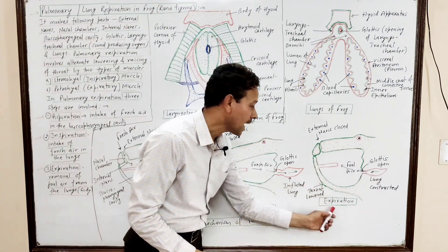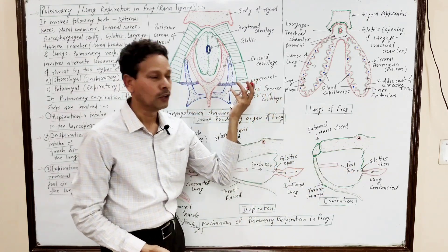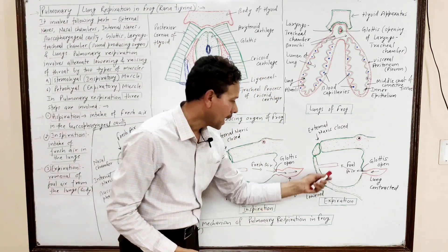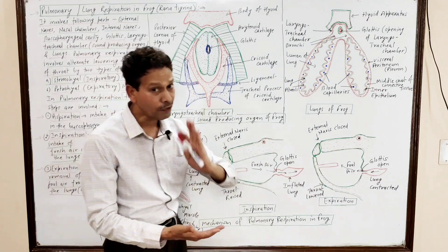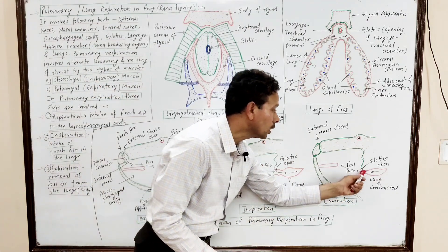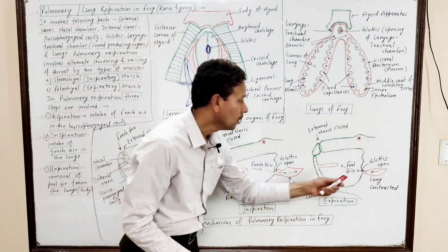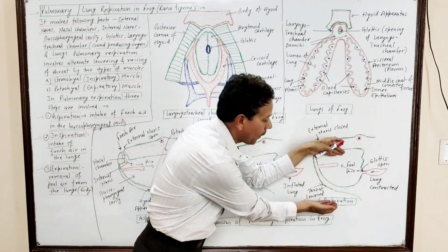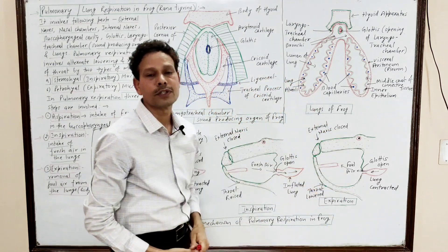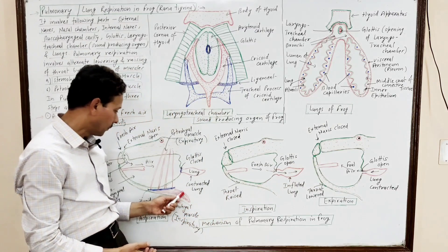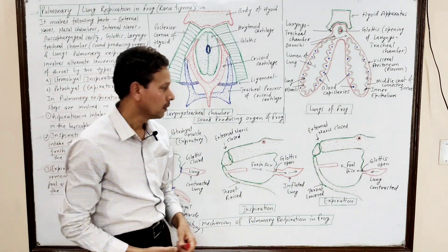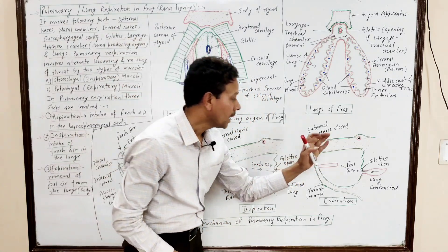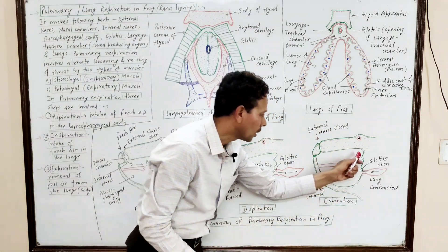The last step is expiration — foul air from the body, from the lungs, is removed out. Expiration involves two steps. In the first step: the glottis opens, the lungs contract, the buccal-pharyngeal cavity becomes enlarged due to the contraction of the sternohyal muscles, but the external nares remain closed. In the second step of expiration: the glottis is closed, the buccal-pharyngeal cavity is raised, the size of this cavity gets reduced, pressure develops.